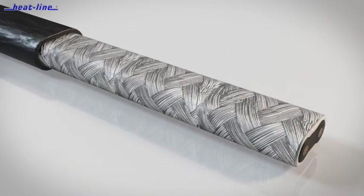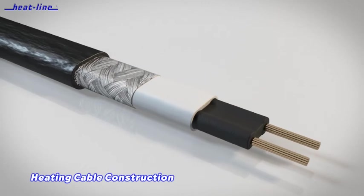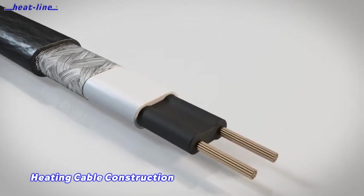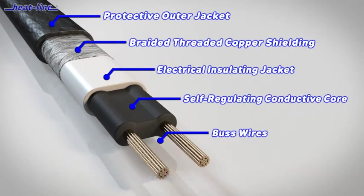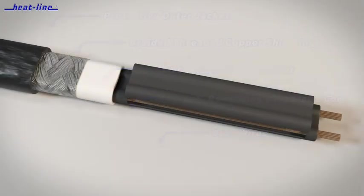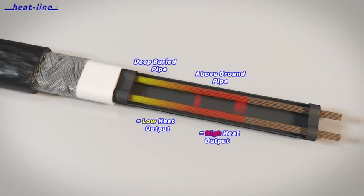Heat-Line heating cables are specially blended combinations of polymer and conductive carbon that create electrical paths between parallel bus wires at every point along their circuit length. Heat-Line self-regulating heating cables automatically adjust heat output at each point microscopically along their length.